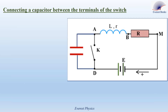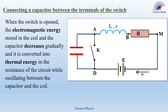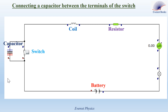Now we introduce another method to avoid the damage of the switch: connecting a capacitor between the terminals of the switch. When the switch is opened, the electromagnetic energy stored in the coil and the capacitor decreases gradually and is converted into thermal energy in the resistance of the circuit while oscillating between the capacitor and the coil. This phenomenon is called free-damped electromagnetic oscillations. In this simulation, a capacitor is connected in parallel across the switch. The current has a value of 87.4 milliampere. When we open the switch, free-damped electromagnetic oscillations take place, and no sparks appear at the switch contacts.